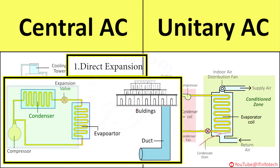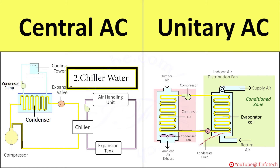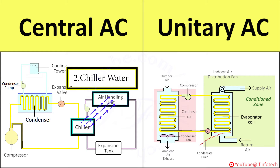The cooling coil of the refrigeration plant is fixed in the air handling unit and the expansion valve is provided very close to the cooling coil. In the chilled water system, chilled water or brine solution is circulated through the cooling coil in the air handling unit to cool the room air. The chiller in the chiller package and the cooling coil in the air handling unit are connected by chilled water pipes or brine pipes to pump and circulate it between the chiller and cooling coil.